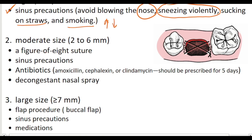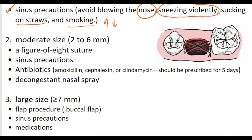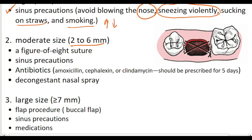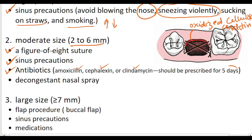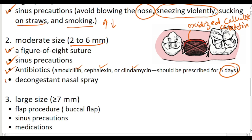For moderate-size communication, like 2 to 6 mm, we will pack the socket with oxidized cellulose or gelatin. We will insert a figure-of-8 suture and give the patient sinus precautions. We will also prescribe antibiotics like amoxicillin, cephalexin, or clindamycin for 5 days. A decongestant nasal spray is also recommended in this case.